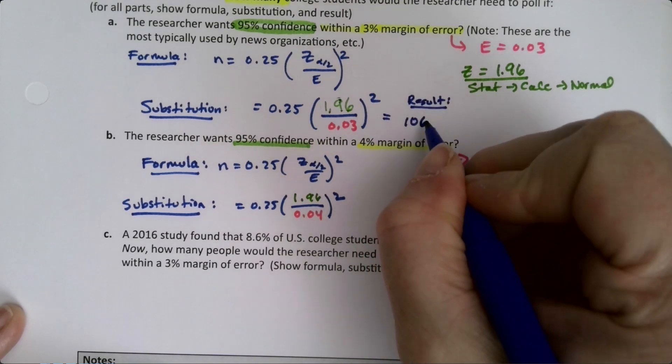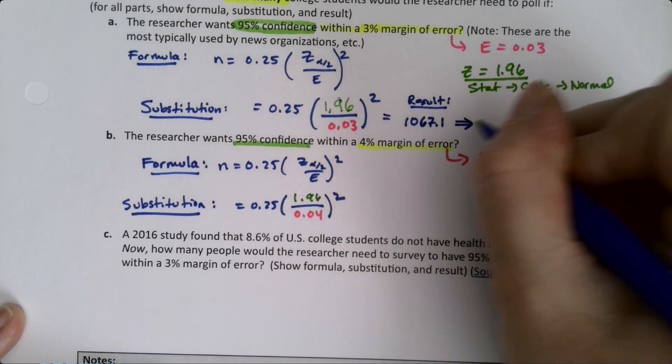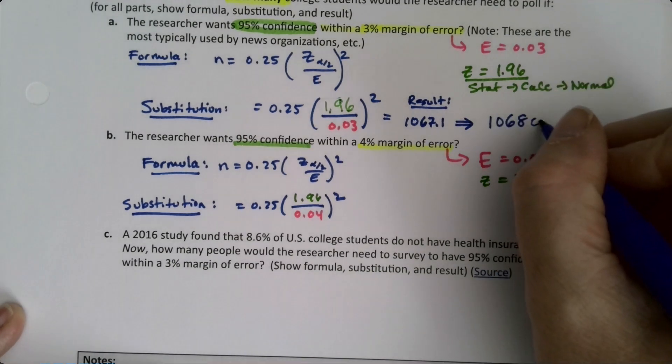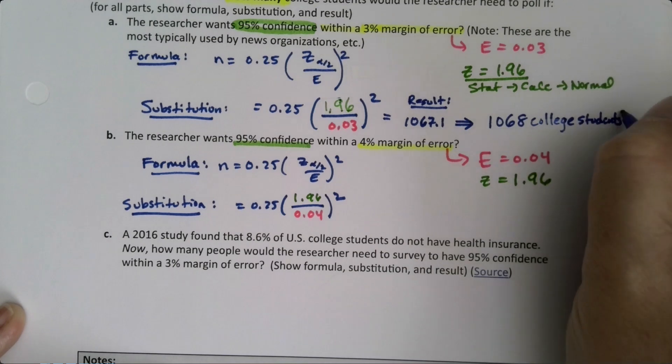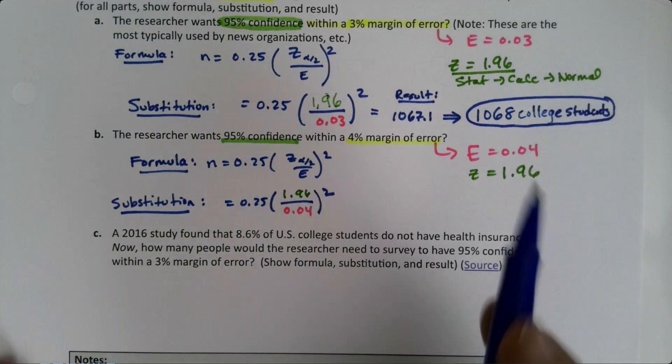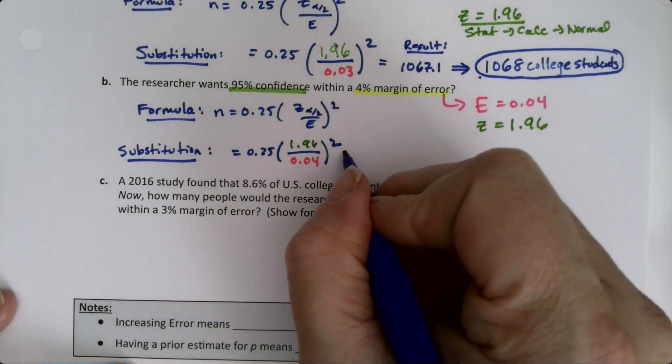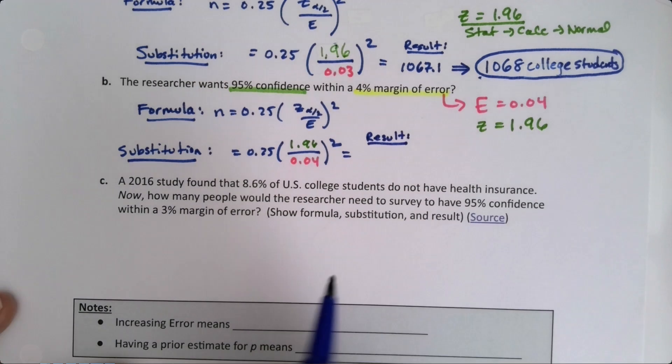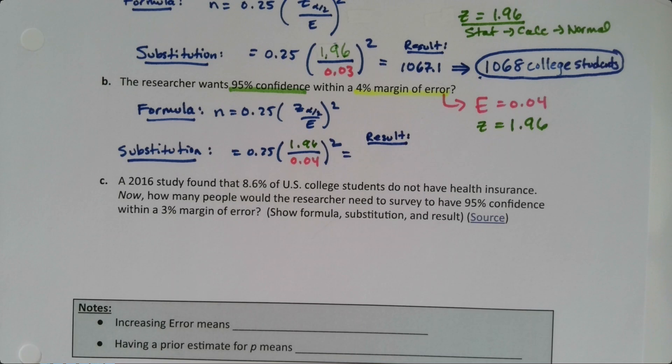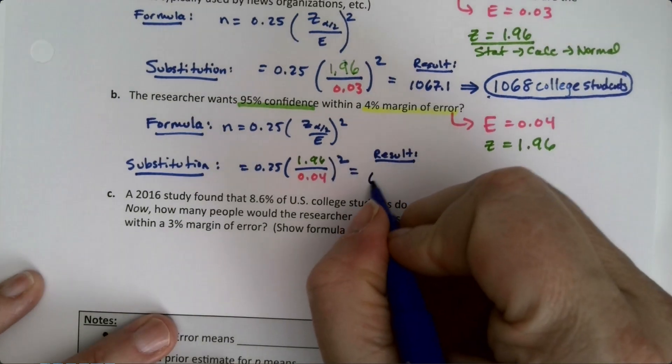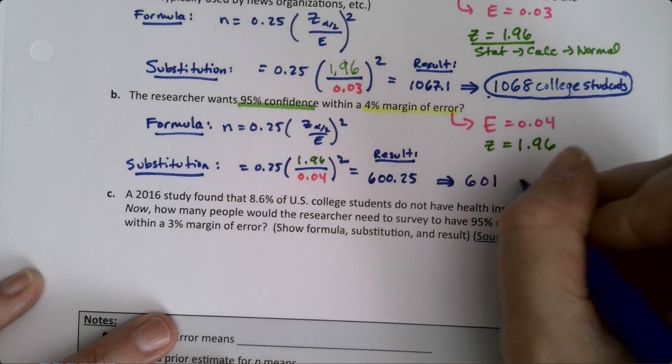So it's 1067.11. The result is 1067.1, but we have to round that up to 1068 college students. We have to round up - you must go up even though that was only 0.1. Now with 0.04, it's less people: 600.25, which rounds up to 601 college students.